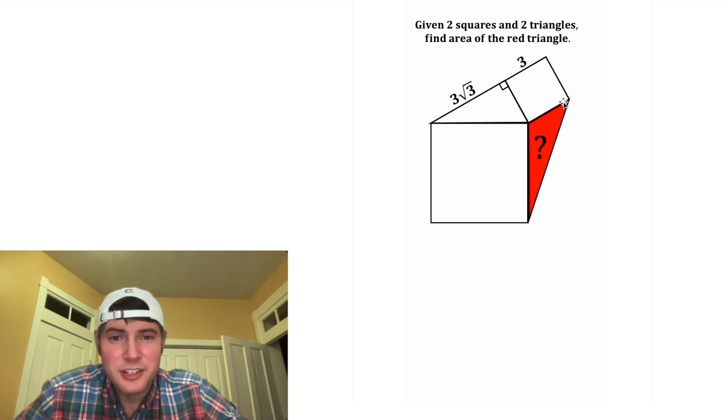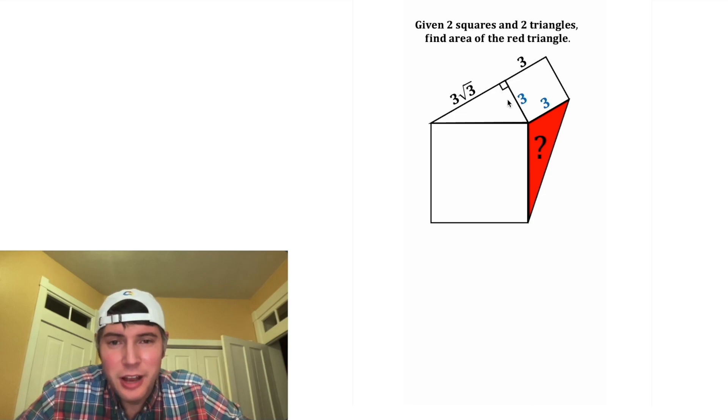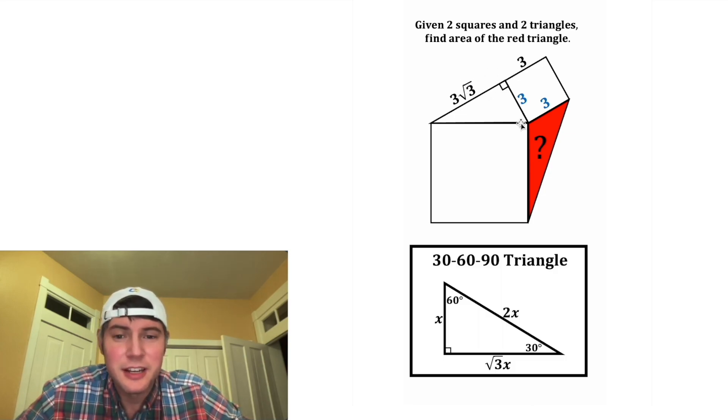For this square up here, we know all the sides are congruent, so they're all equal to three. And now looking at this right triangle, I'm noticing that the medium side is root three times the shortest side. That means it's going to be a 30, 60, 90 triangle.